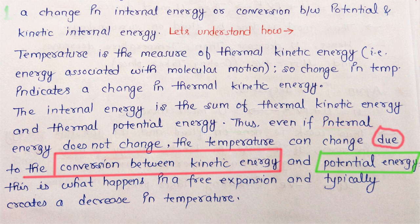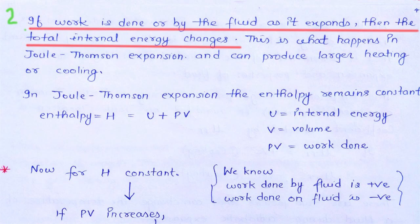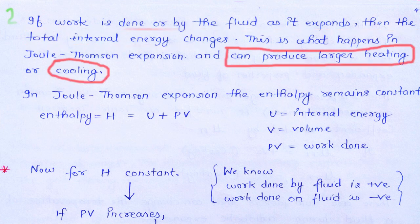जब internal energy change नहीं हो रही हो, उस condition में अगर kinetic energy, potential energy में convert हो जाए या potential energy, kinetic energy में convert हो जाए, तो temperature change हो सकता है। इस expansion में जब kinetic energy, potential energy में change होती है तो potential energy बढ़ जाती है और kinetic energy घट जाती है, जिस वजह से temperature की value भी घट जाती है। इसी तरह gas ठंडी होती है या गरम — temperature increase या decrease होगा।